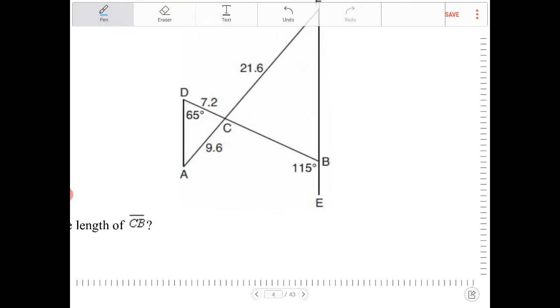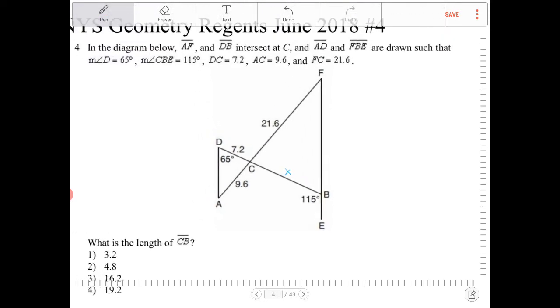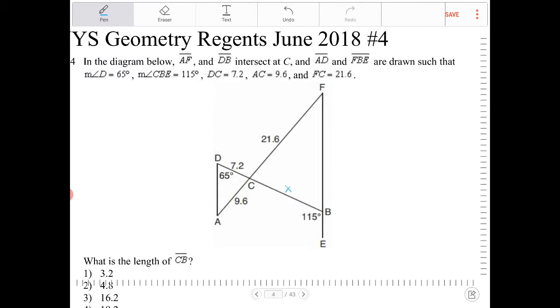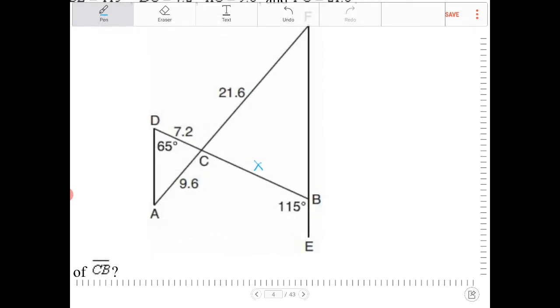I'm going to call the length of CB here X. Notice that in the description of this problem, the author didn't say that AD is parallel to FE. So because they're not parallel, we don't know whether or not triangle ACD is similar to triangle FCB. We're going to have to find some way to justify for ourselves that these two triangles are similar. And if they are similar, then we can set a proportion to solve for X. More likely than not, they are going to end up being similar, but let's see here.